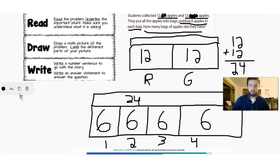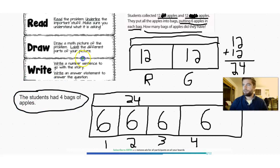Let's write the answer to our question. The students had four bags of apples. And let's circle our answer. Check off that we did each step. And check that out. We just solved two two-step word problems.